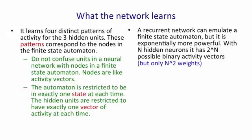So a recurrent neural network can emulate a finite state automaton but it's exponentially more powerful in its representation. With n hidden neurons, it has two to the n possible binary activity vectors. Of course, it only has n squared weights so it can't necessarily make full use of all that representational power. But if the bottleneck is in the representation, a recurrent neural network can do much better than a finite state automaton.